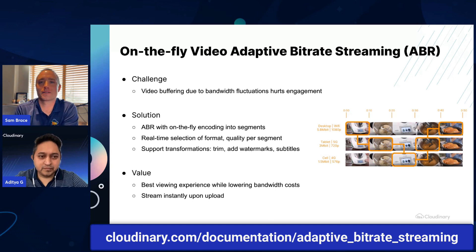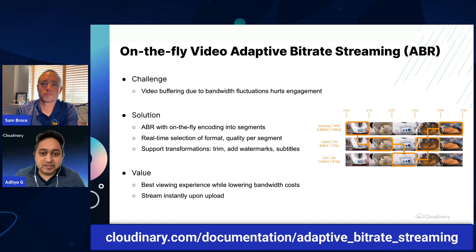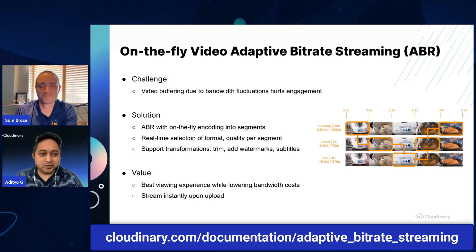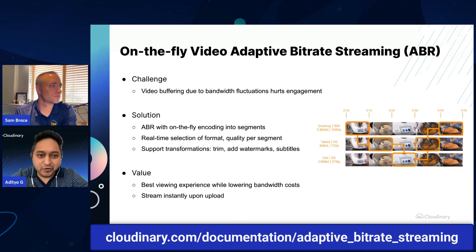What does that mean? So as most people are familiar, adaptive bitrate streaming is one of the technologies to prevent any kind of buffering — those pixelated images or that dreaded circle spinning that you see when you are watching your favorite video or any kind of video that you're engaged with.